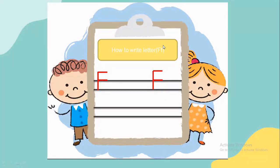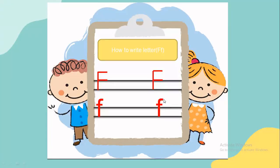And how to write small f: make a down stick, umbrella hand, and sleepy line. Again: umbrella hand and sleepy line. This is letter F.